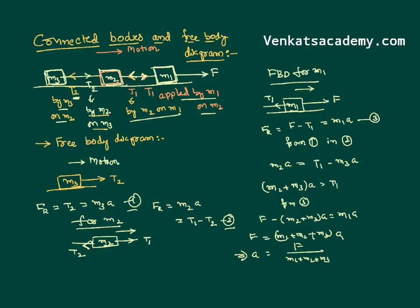I can put this acceleration into equation number 1 to get the value of tension T2. From equation 1: T2 equals M3 into A, where A is F divided by M1 plus M2 plus M3. Now I know the value of T2. Once I know T2, I can substitute it into equation 2 and get the value of T1. You know the value of acceleration, so you simply substitute, calculate, and get the answers. This is the way we apply free body diagrams and Newton's laws of motion to find unknown physical quantities like acceleration and tension.